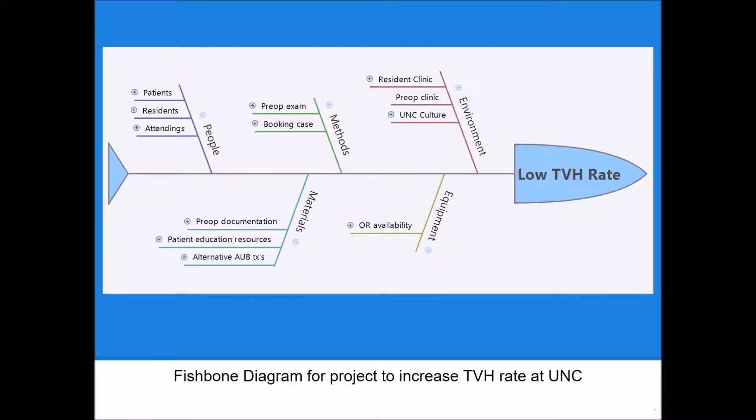Here's the overview of our fishbone diagram. We started by stating our main problem, our lower than ideal TVH rate at UNC, in the head of our fishbone. You can see I then used the five generally accepted categories that we talked about for our main categories of potential causes: environment, equipment, methods, materials, and people.